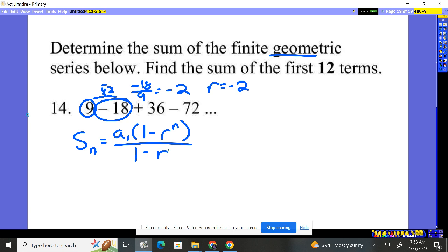So we just need to plug in the formula correctly. The sum of the first 12 is going to equal the first term. What's our first term? Positive 9. This is going to get a little messy here.